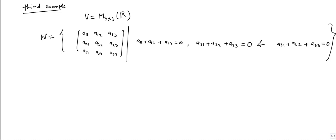Now let's discuss the third example. The third example is we are taking vector space as collection of all 3×3 matrices which we use to say M_3×3 over R.